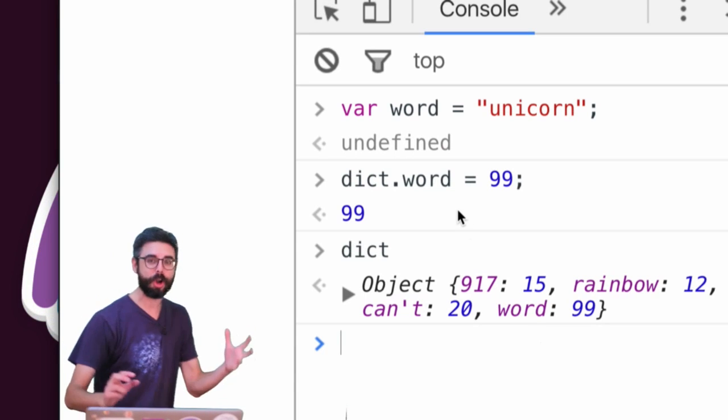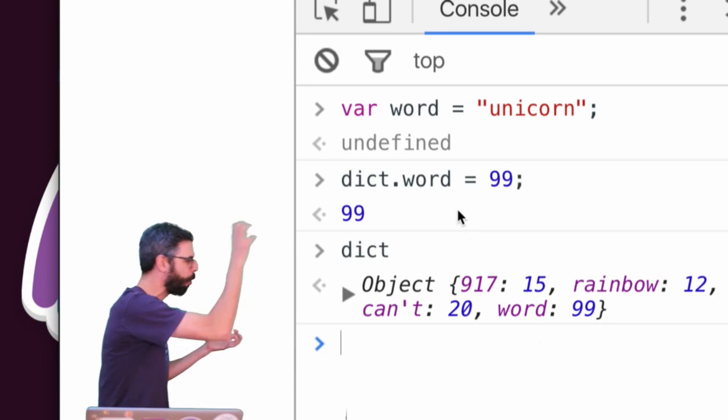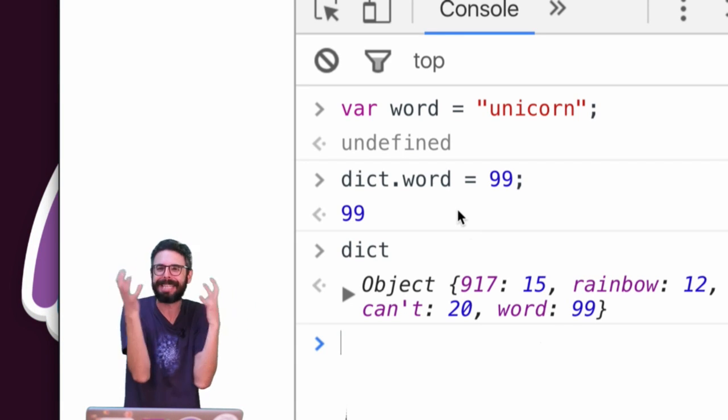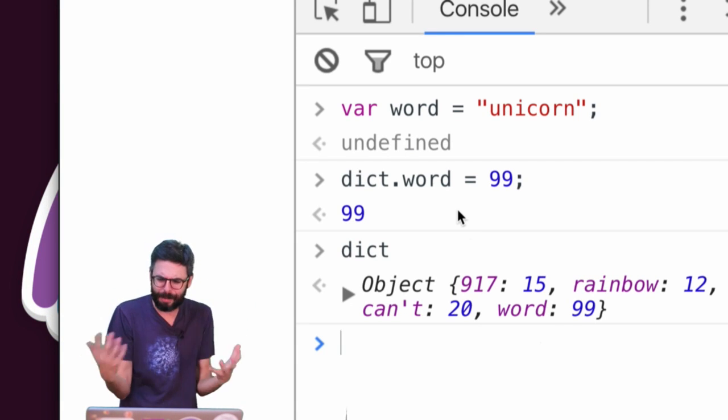Unicorn's not in there. Word, it thinks word is the string, right? It doesn't know that word is that variable. It's like I can't even explain it because it just doesn't make sense in my head. Even though it seems like maybe that would work.